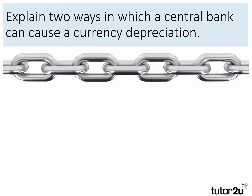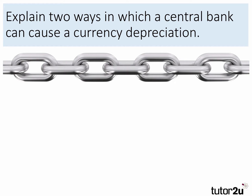Explain two ways in which a central bank could cause a currency depreciation. Attempts by a central bank to cause a currency depreciation happen in a floating exchange rate system — more precisely, a managed floating exchange rate system. Depreciation is defined as a drop in the external value of one currency against another.